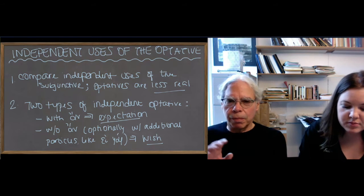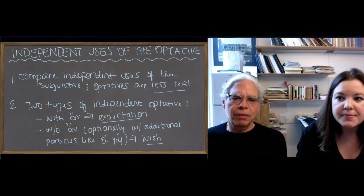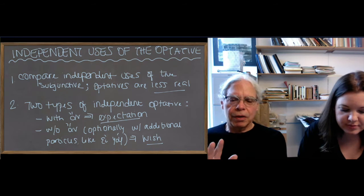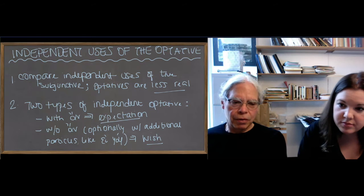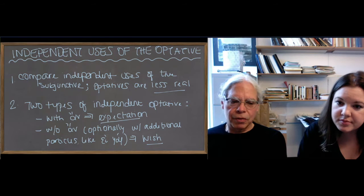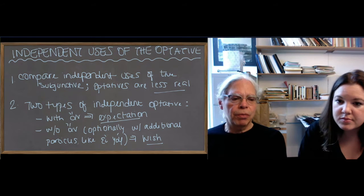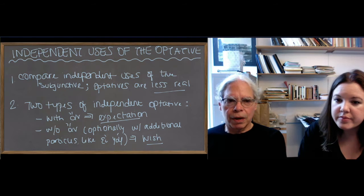It's good to think about the optative and the subjunctive as comparing and contrasting. The subjunctive is always closer to reality, to the indicative, and the optative is closer to the counterfactual forms, but both of them are in contrast with one another.